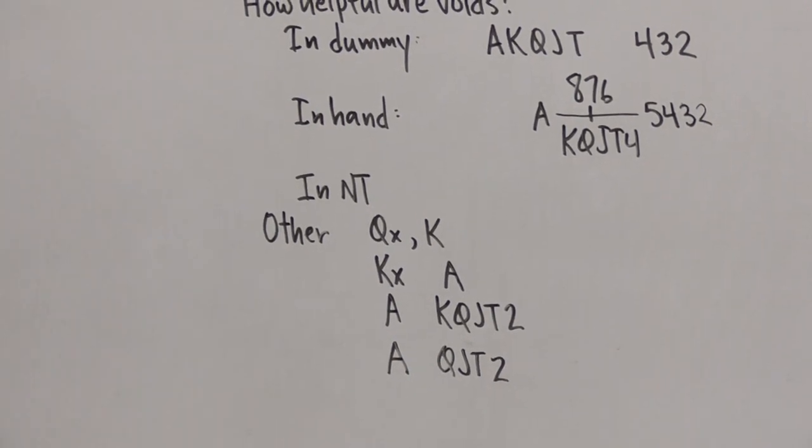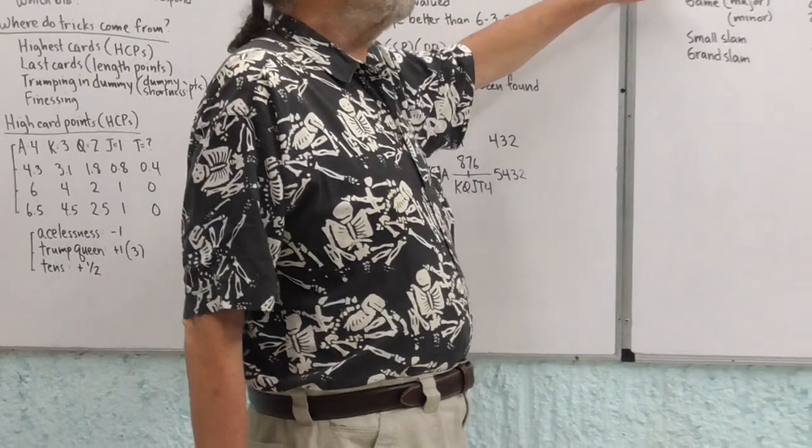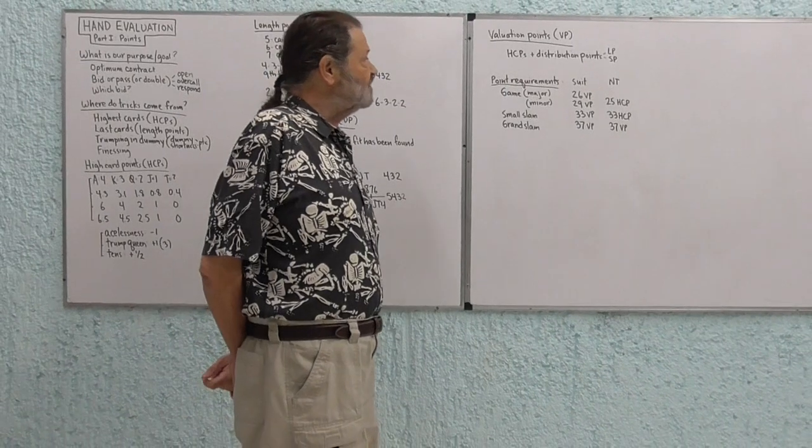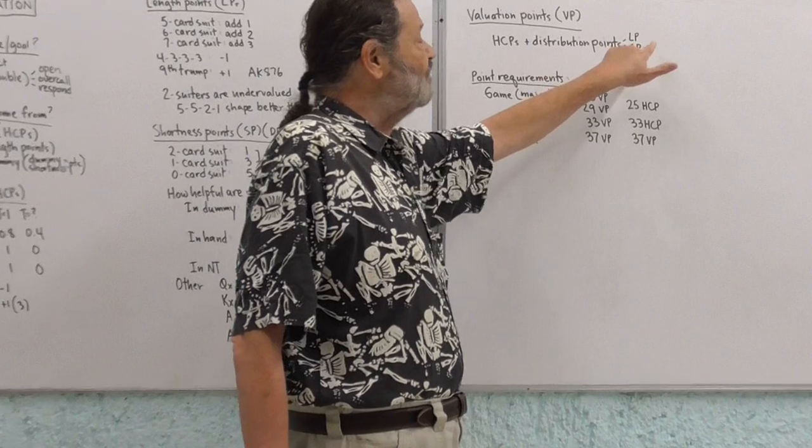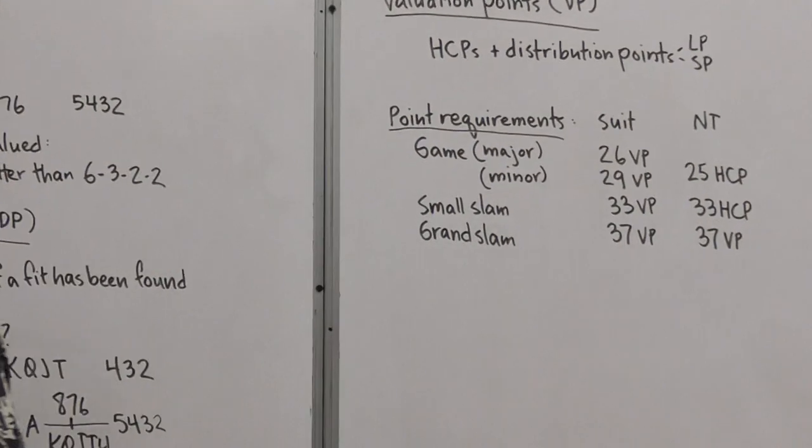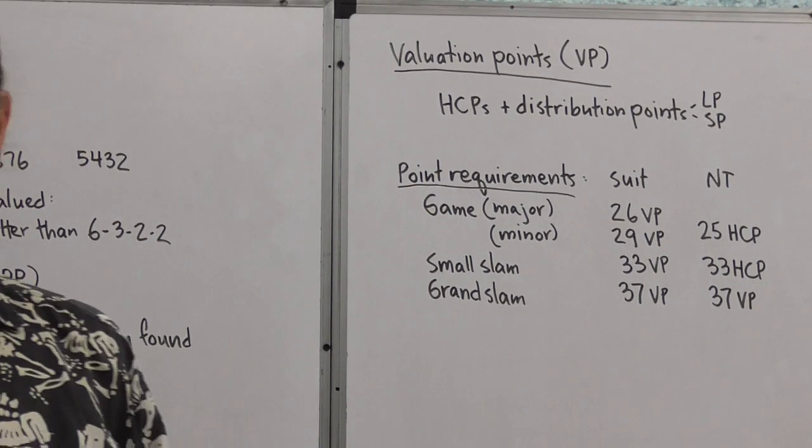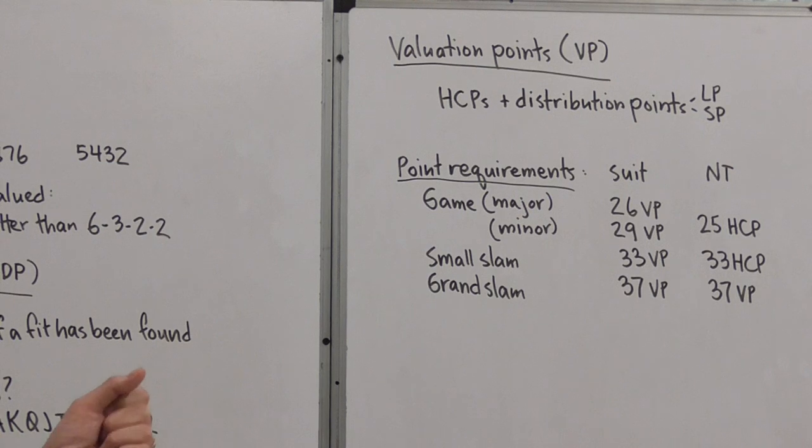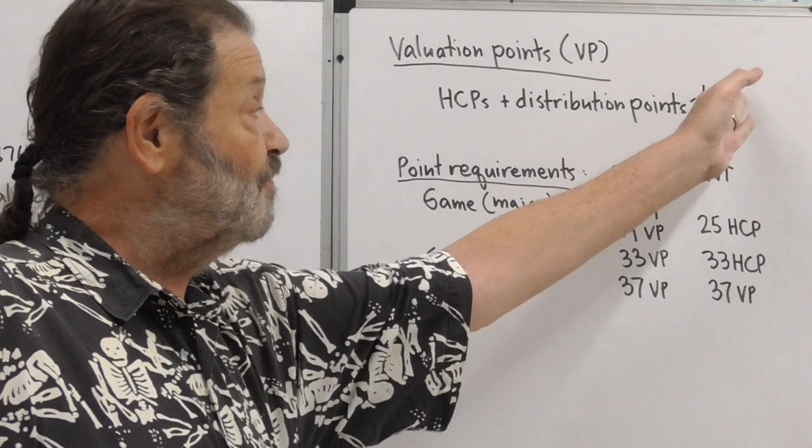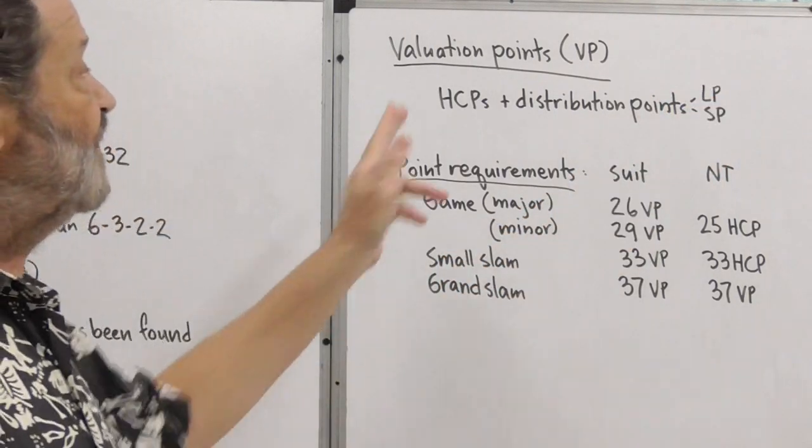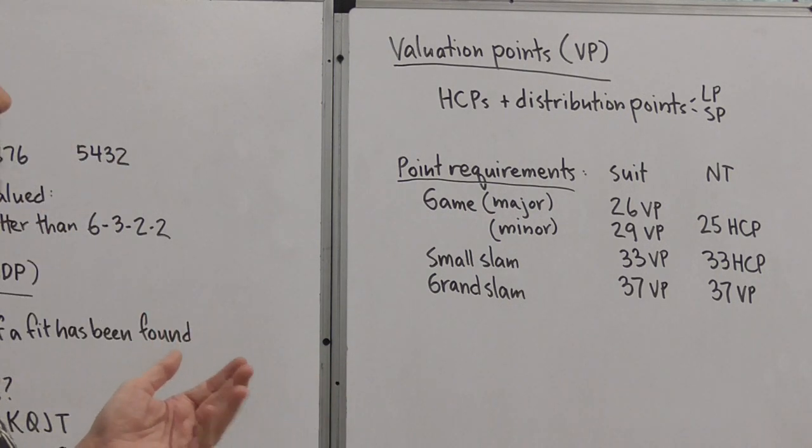Okay, so those are places where shortness points might not, or shortness might not be an asset. I wanted to define another term for you here, valuation points. This is going to be the sum of the high card points and the distribution points, whether those be the length points or the shortness points. You've probably heard that we generally, when we're evaluating a hand until we find a fit, we don't count shortness points. We only count length points and high card points. So our initial bidding, the valuation points will be the high card points, and the distribution points will be the length points. Once we find a fit, we can switch over to the shortness points and give ourselves the one point for the doubleton, three points for the singleton, et cetera.